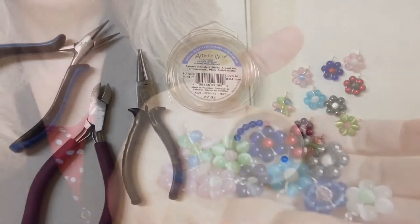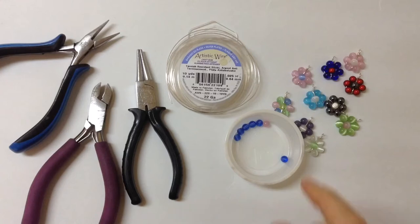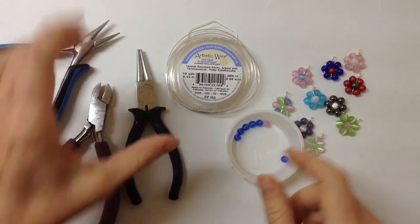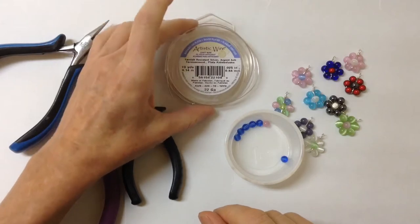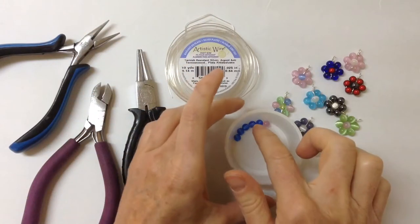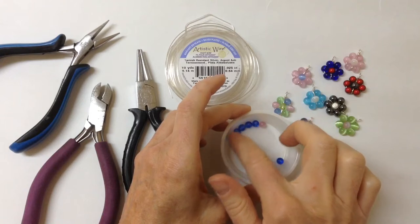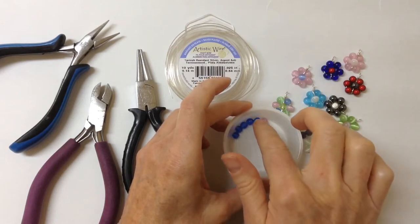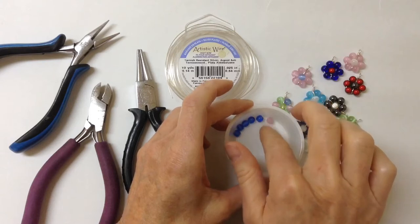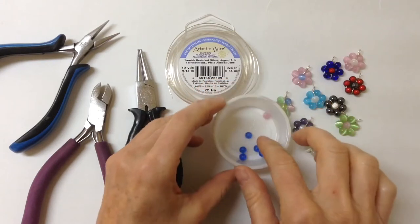To make the daisy pendants it's super easy. You need 22 gauge artistic wire, any kind of flexible wire is good. I'm using 6 millimeter beads, so I need six of one color. They're round, and then another one for the middle. This one is a little bit more faceted.